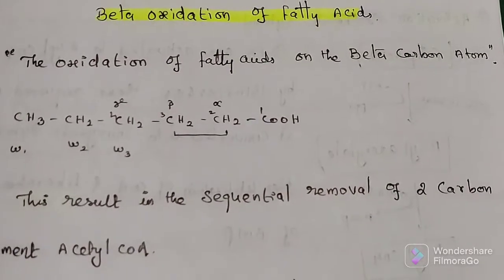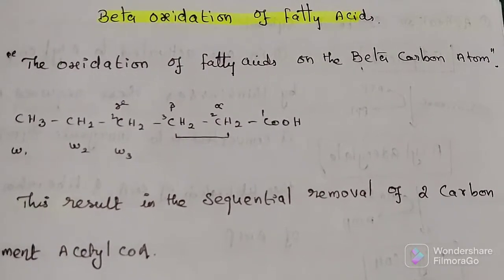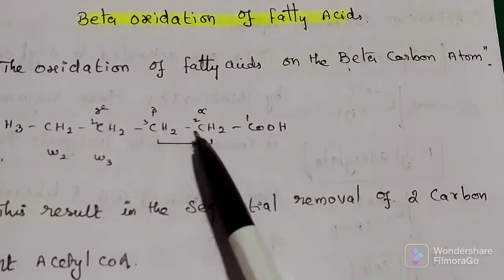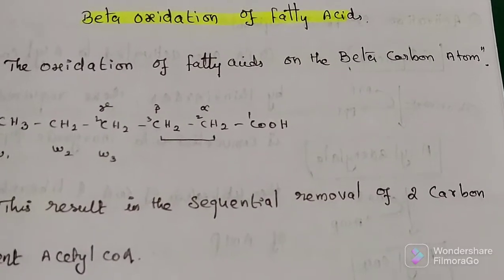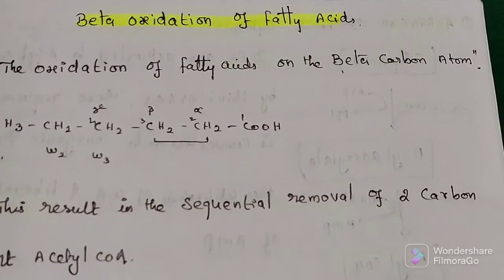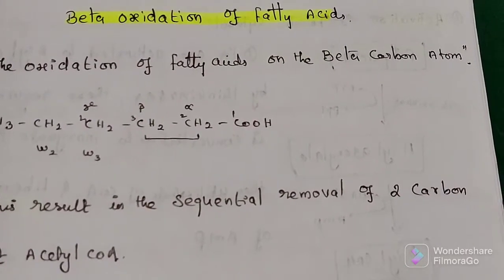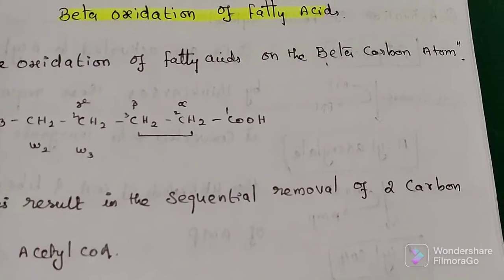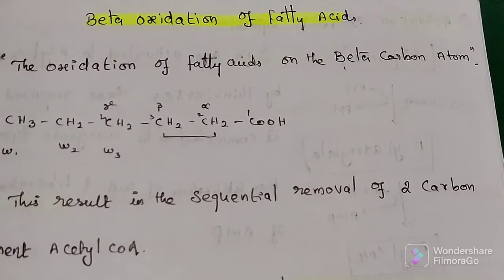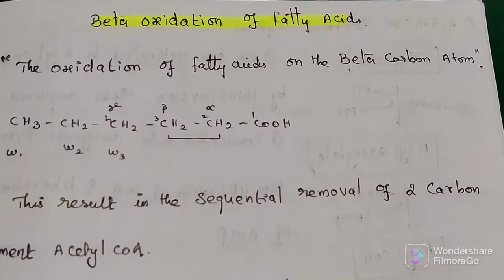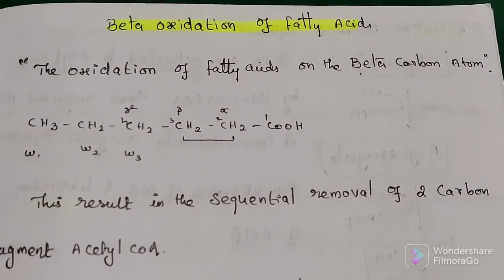In beta oxidation of fatty acid, there is successive removal of a two-carbon component — that is, acetyl-CoA. It typically involves the beta carbon, and there is cleavage between the alpha and beta carbon. This is known as beta oxidation of fatty acid, in which there is successive formation of acetyl-CoA.